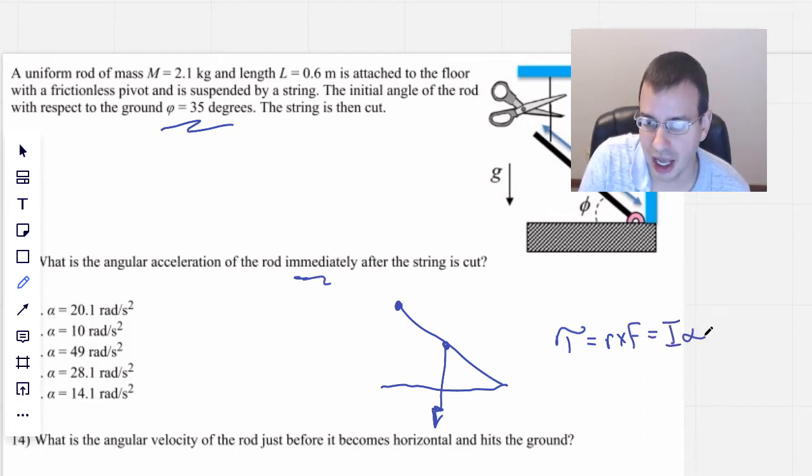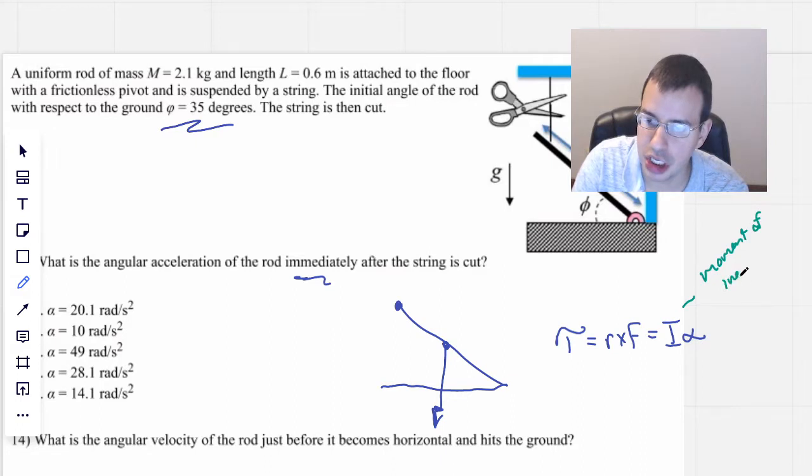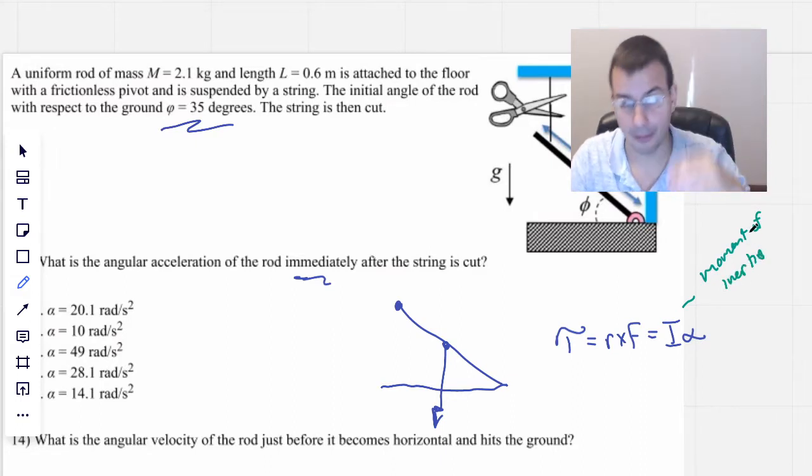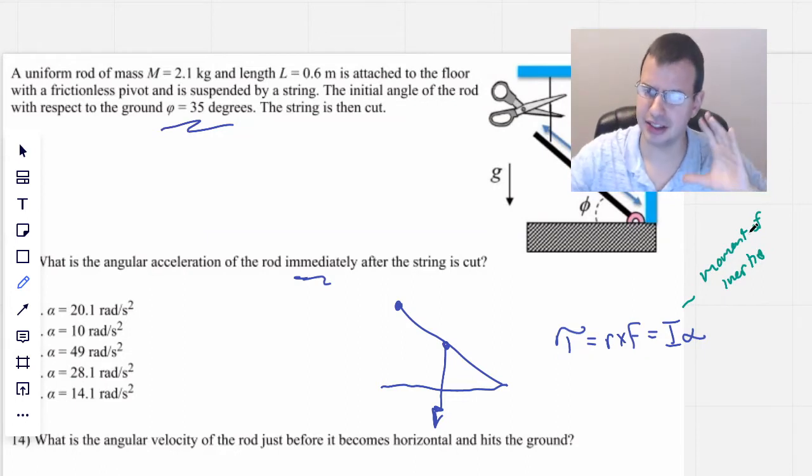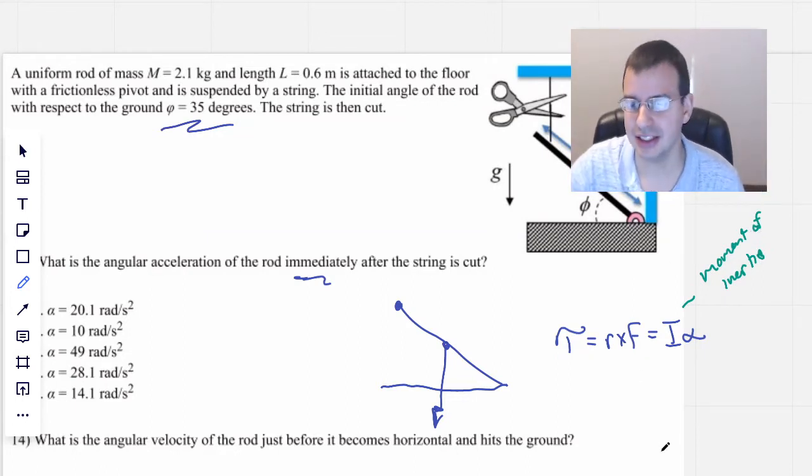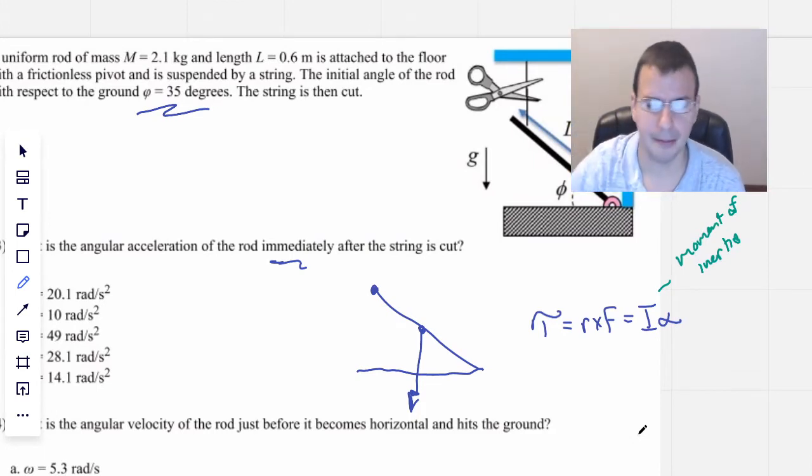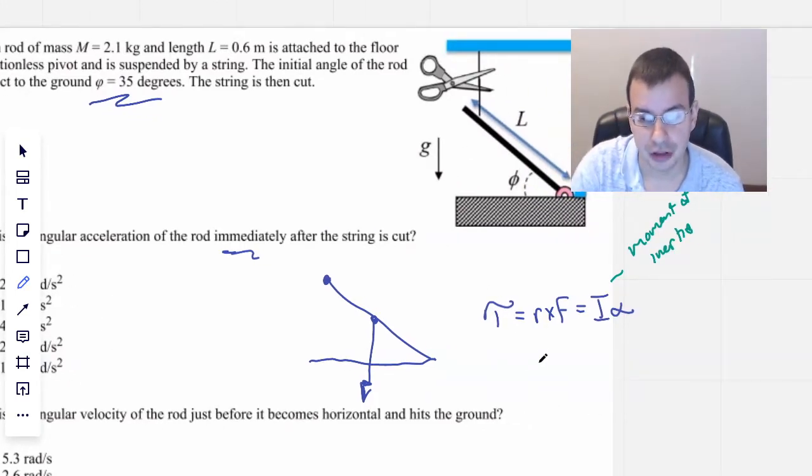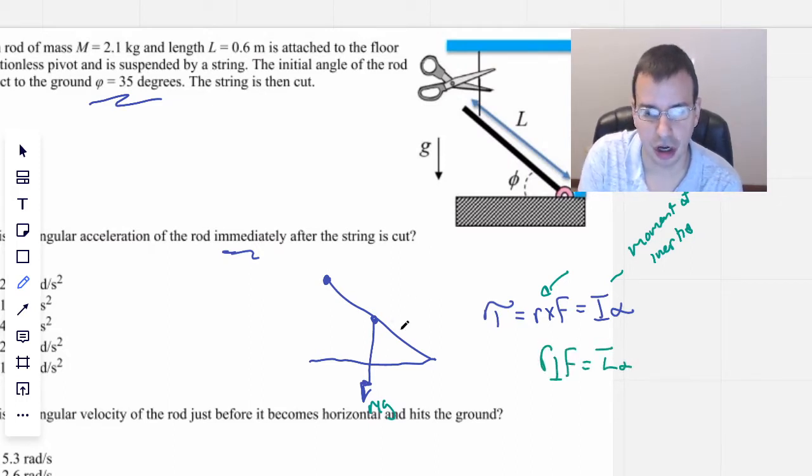We also know that torque is I alpha, where I in this case is moment of inertia. It's the rotational equivalent of mass - a weighted average of mass that takes into account where the mass is. This will be mass times gravity. I like to write this R cross F as R perpendicular F equals I alpha. R perpendicular will be right here, and we want this part.